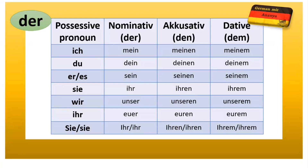Now let's see the paradigm for masculine. The nominative forms are: mein, dein, sein, ihr, unser, euer, ihr, ihr. For accusative: meinen, deinen, seinen, ihren, unseren, euren, ihren, ihren. And for dative: meinem, deinem, seinem, ihrem, unserem, eurem, ihrem, ihrem.